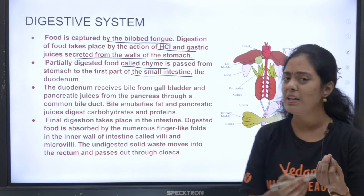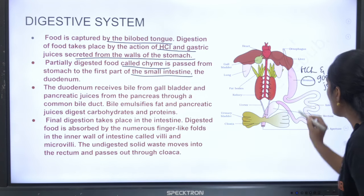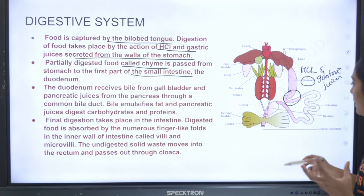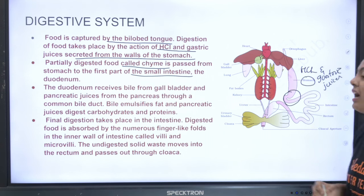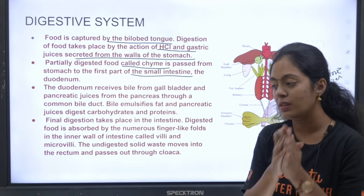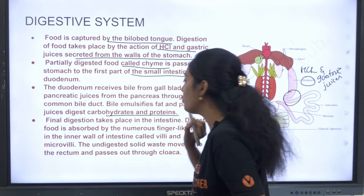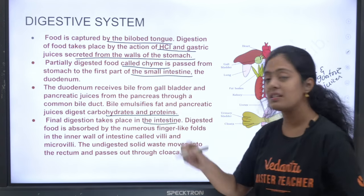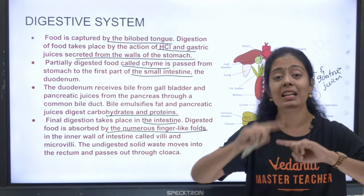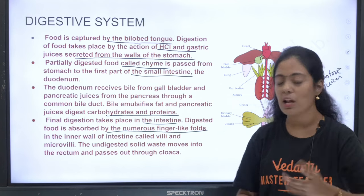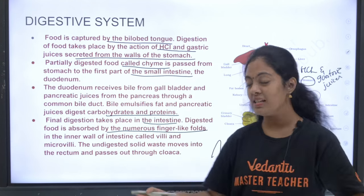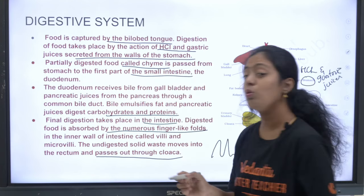The partially digested food, called chyme, is passed from the stomach to the first part of the small intestine — the duodenum. The duodenum receives bile from the gallbladder and pancreatic juice from the pancreas. Fat digestion also takes place in the intestine with the help of bile and pancreatic juice. Digested food is absorbed by numerous finger-like folds called villi in the inner wall of the intestine.